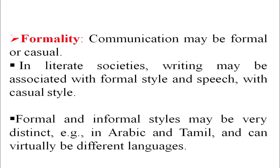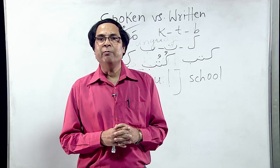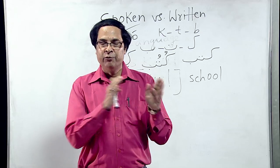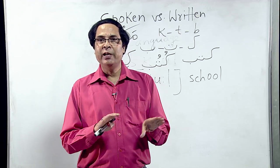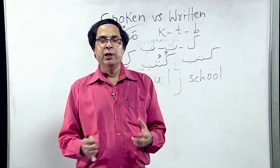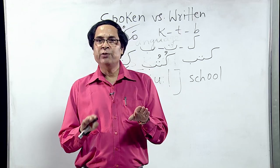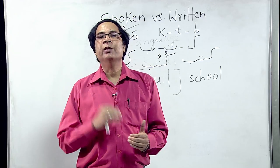The next difference is Formality. Communication may be formal or casual. In literate societies, writing is associated with formal style and speech with casual style. Formal and informal styles may be very distinct — for example, in Arabic there are two varieties used formally and informally. Tamil also has high Tamil and low Tamil used in different situations. People in Bihar, UP, Uttarakhand, Haryana, Punjab, Bengal, and Assam speak different varieties of Hindi, but when used formally — in novels, newspapers, or on TV — a different standard variety is used.